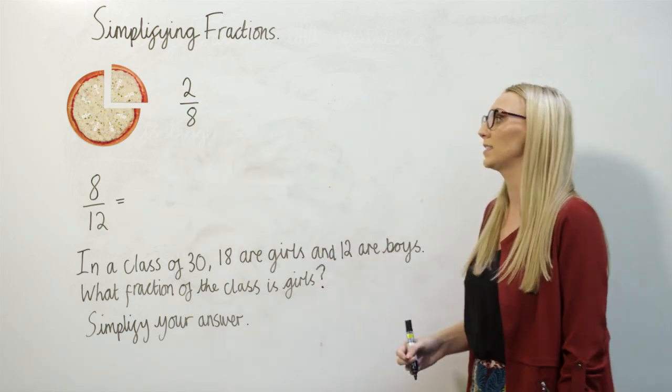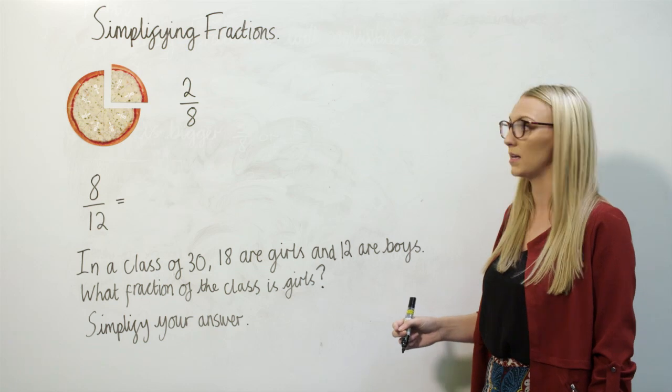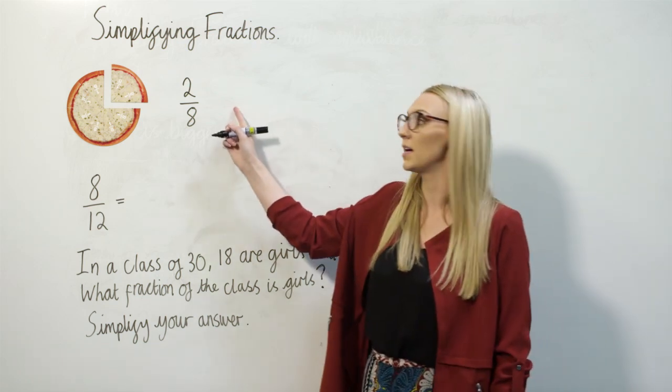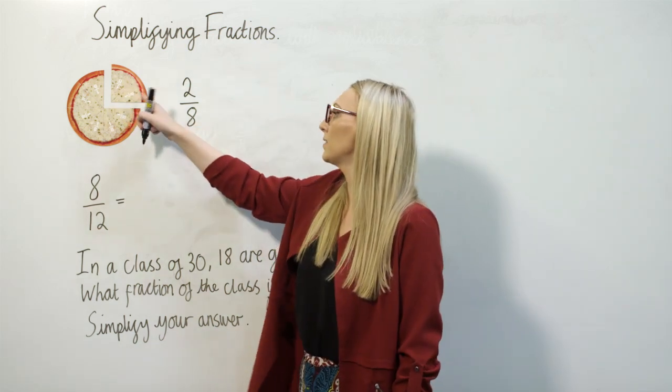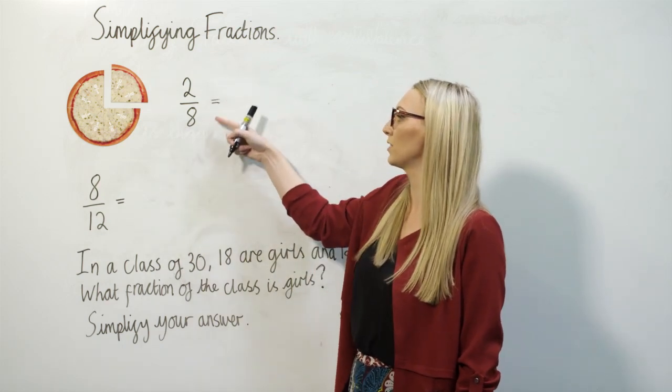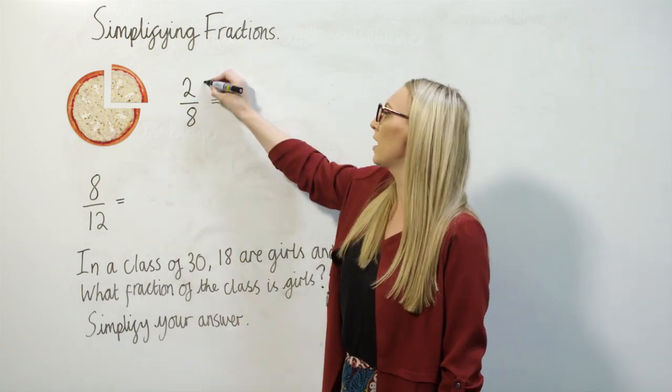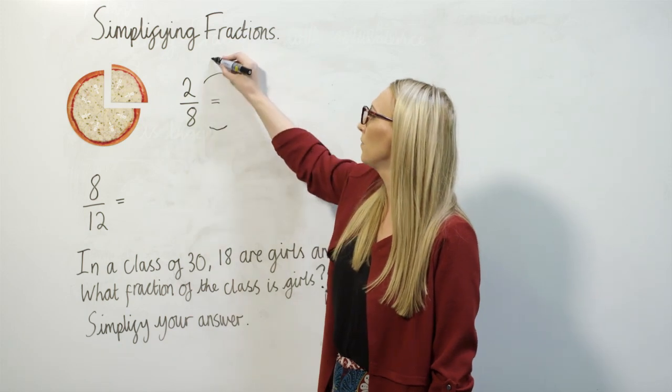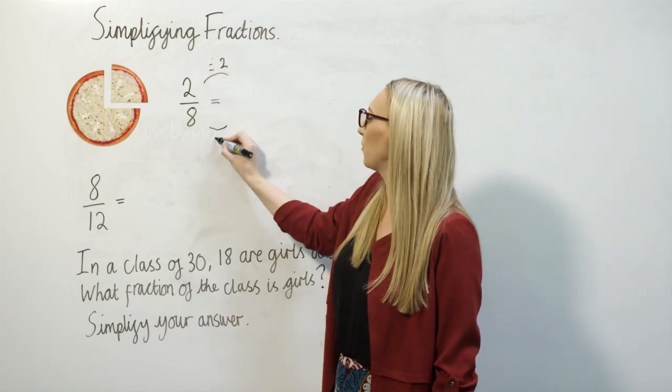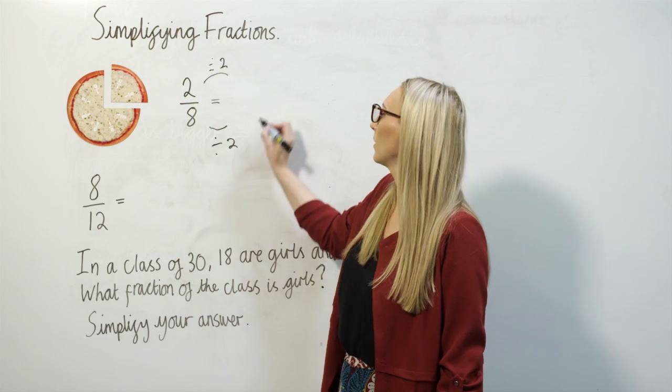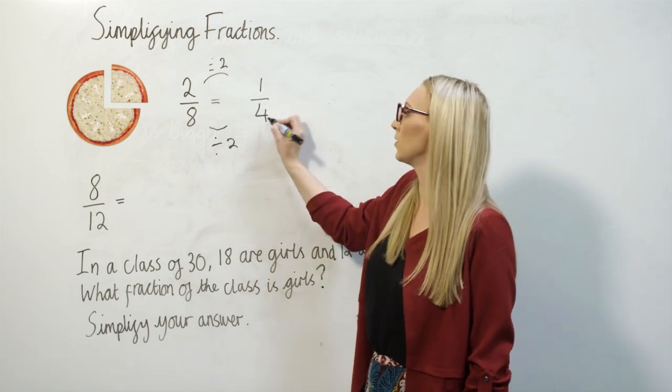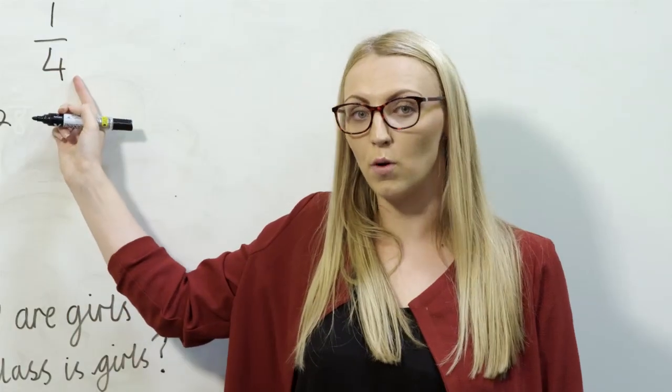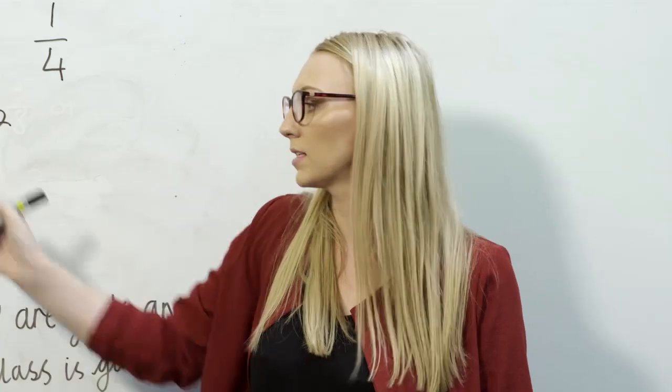If you look at this example, we've got 2 eighths of the pizza, and I want to simplify this answer. I can see I've got 2 eighths here, and I'm going to find a common factor of both 2 and 8. I can divide both the top and the bottom by 2, so that would be 1 quarter. I can see here that 1 quarter is equivalent to 2 eighths.